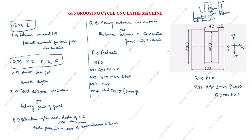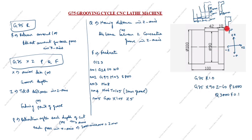N05: X105 Z5. The X value is given as 100, so we take X as 105. Z5 means 5 mm away. So the tool is now positioned at X105, Z5 — this is the starting point of the tool. You can see in the drawing: Z5 is 5 mm out, X105 is above the 100 diameter.